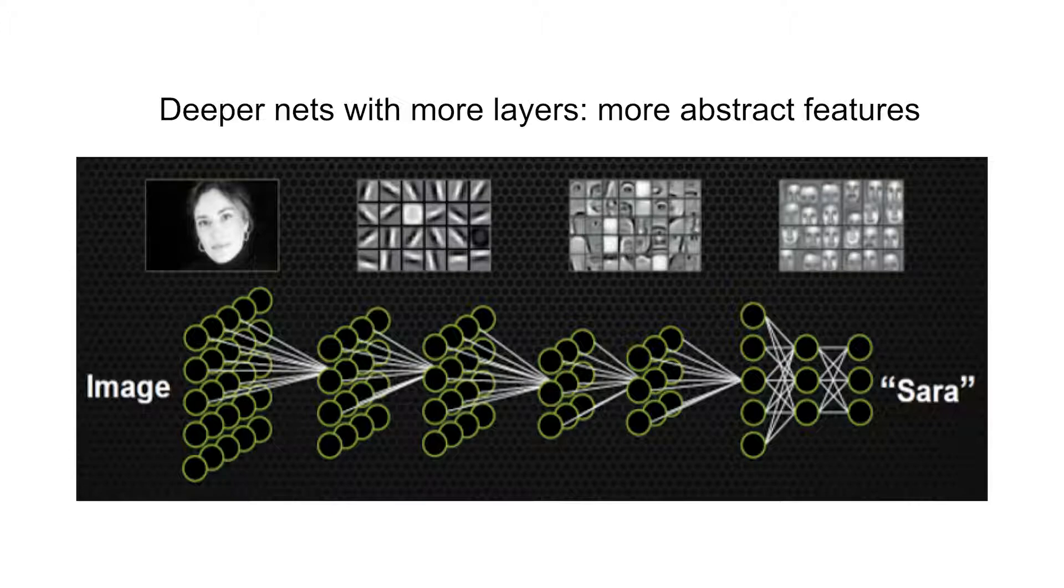You might see this being used in Facebook, for example, when it recognizes your friends from pictures. In a network like this, when there's many, many hidden layers, and we look at the kinds of patterns that seem to activate the neurons in the different layers, they seem to become, in some sense, more and more abstract and conceptual.